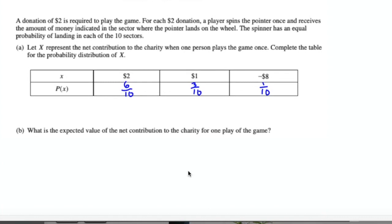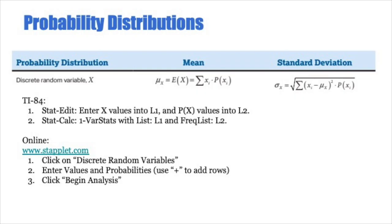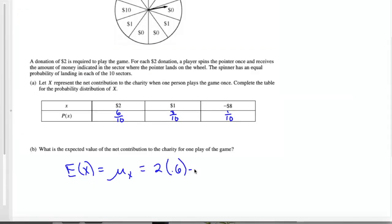Part B is asking for the expected value. Expected value is the mean of a discrete distribution. To calculate it, you multiply each x times its corresponding P(x). So I'm going to do $2 times 0.6, or 6 out of 10, plus $1 times 0.3, plus negative 8 times 0.1 to get an expected value of $0.70. So in the long run, if you did this many, many times, your average expected donation would be about $0.70.